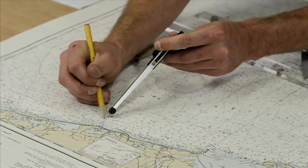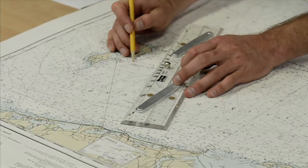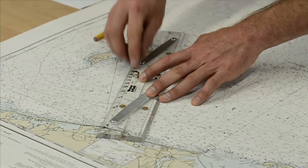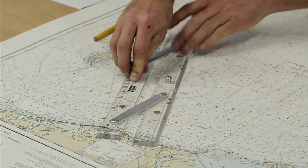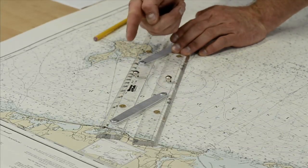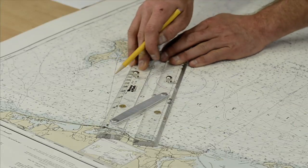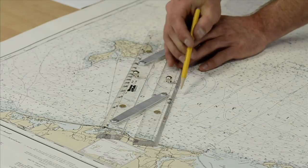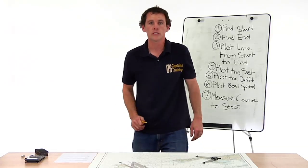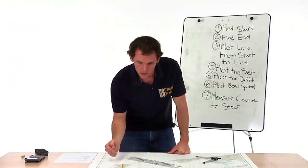We mark that point. Now we line our parallel rules up from the end of the current vector to where our boat speed crossed our intended course, and we walk it over the compass rose. Remember where you started — Great Salt Pond — and where you're going — Quono Pond. So you go from the center of the compass toward the direction you're actually traveling. What we come up with is 331 degrees true — and that's the course we need to steer to make it from Great Salt Pond to Quono Pond.